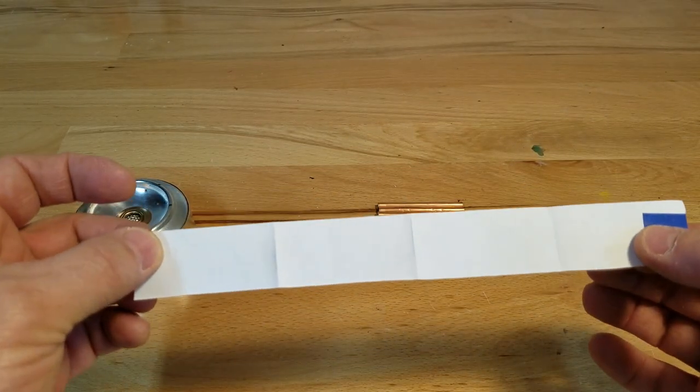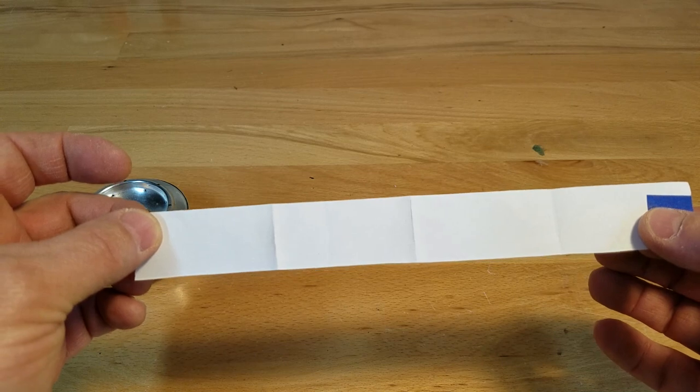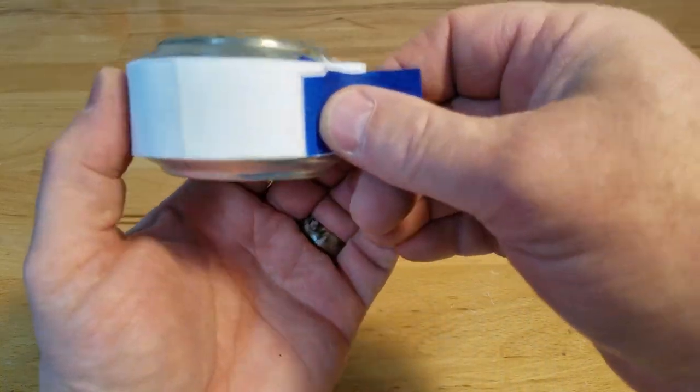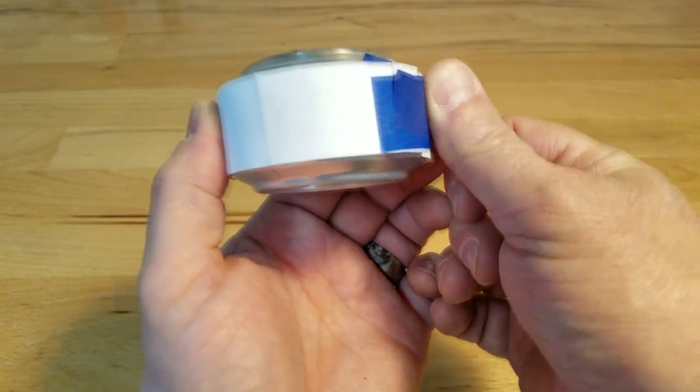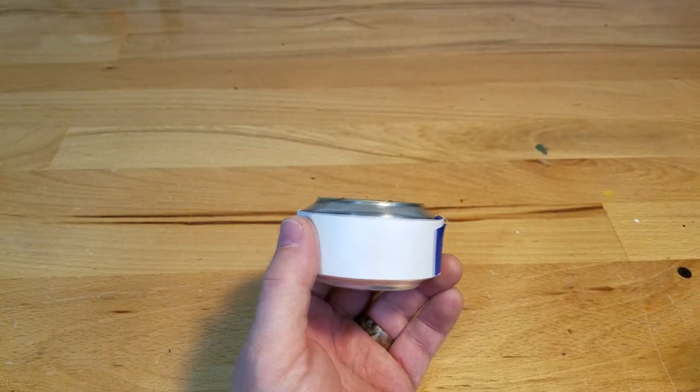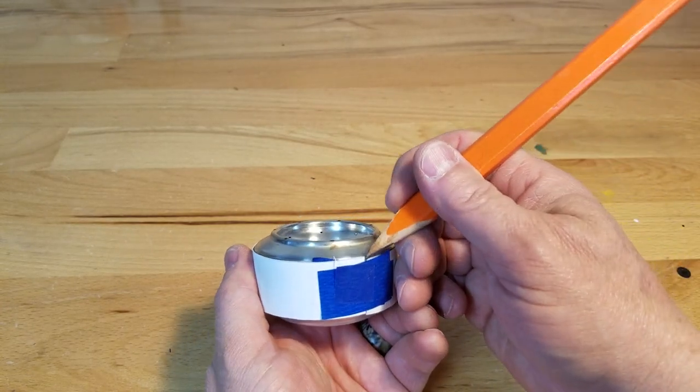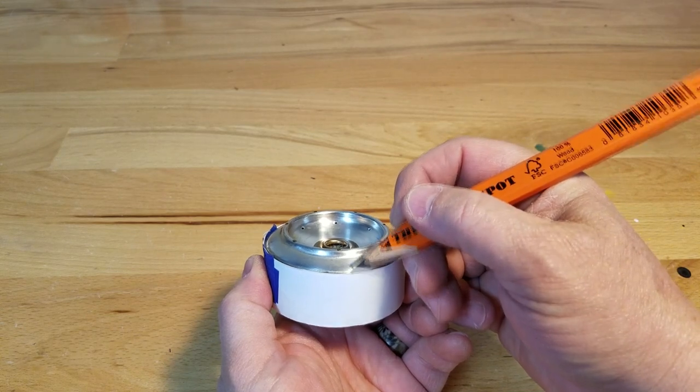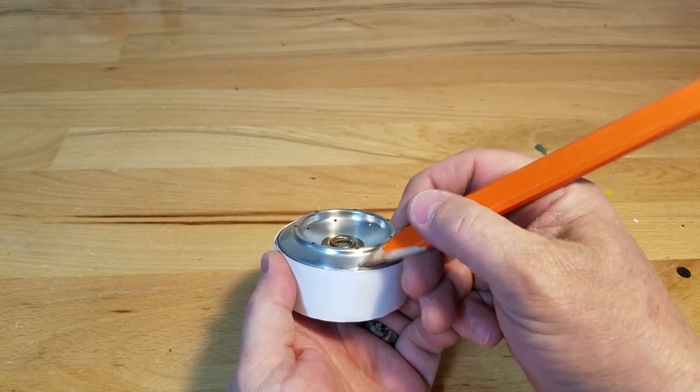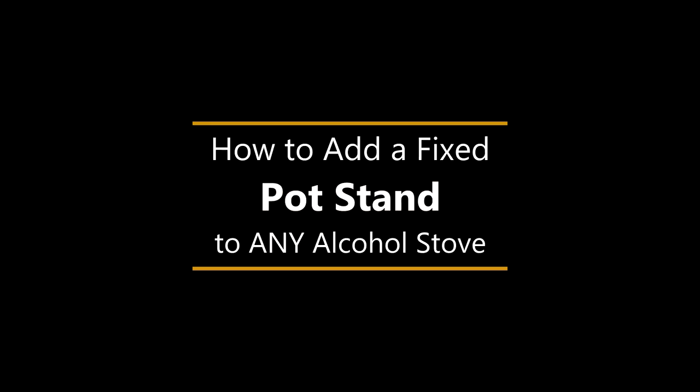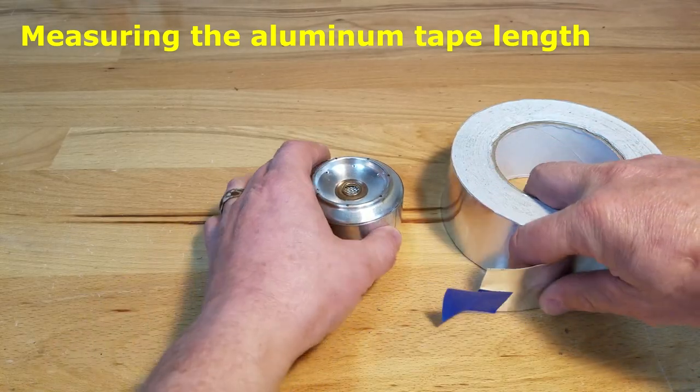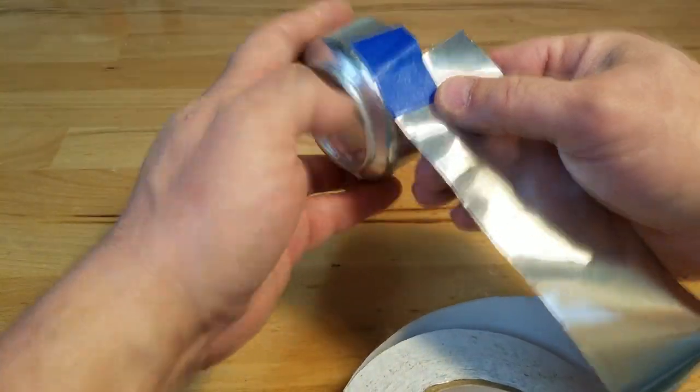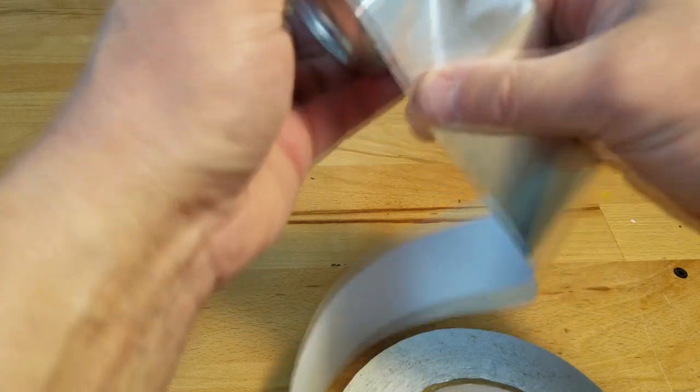Those will be your four marks where the legs will go. Transfer the piece of paper that you just folded back onto the circumference of the stove and mark where those four creases are. That's where the legs will go. The next step is to measure off some aluminum foil tape.